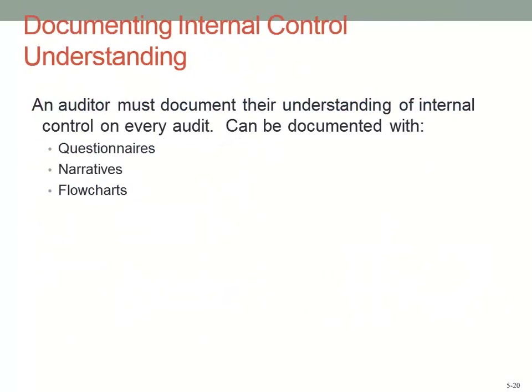The control matrix — one key way that auditors are documenting their understanding of internal controls is through flowcharts, as well as narratives and questionnaires. A flowchart is a visual way of taking that control matrix, for example, and identifying the particular area you're looking at, seeing how those documents are flowing through the system.